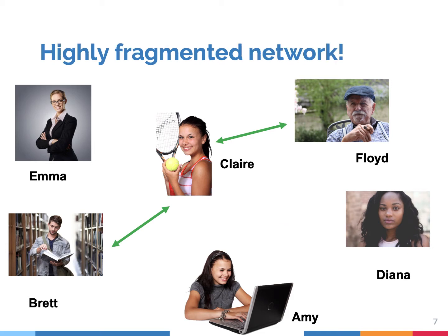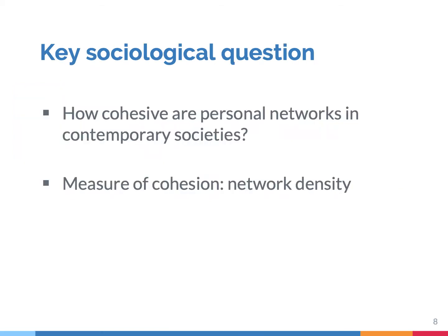And this will be the opposite of a cohesive network — a very fragmented network, where most of your connections don't know each other. Such fragmented networks do not generate strong solidarity, trust, and norm enforcement. So what sociologists like to know is: do people nowadays have cohesive networks, or do our connections hardly know each other? The way they measure cohesion in networks is by looking at density.